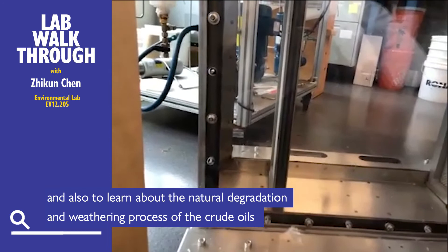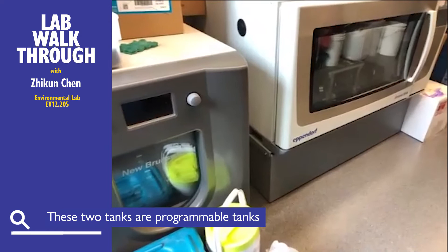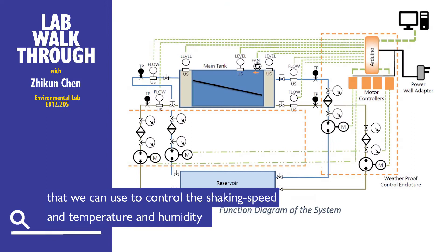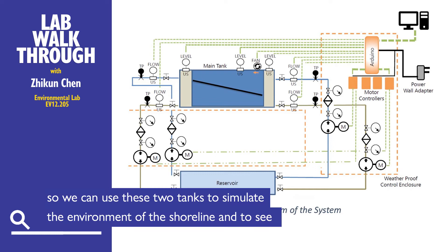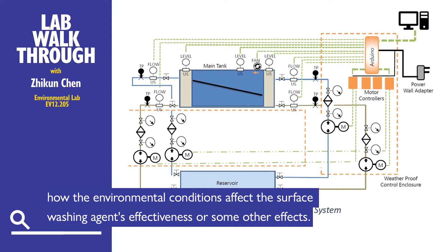These two are programming tanks. We can use them to control the shaking speed, temperature, and humidity. So we can use these two tanks to simulate the shoreline environment and see how environmental conditions affect surface washing agent efficiency or produce other effects.